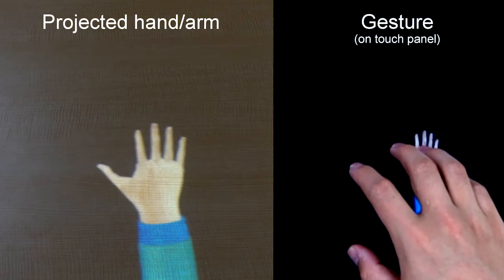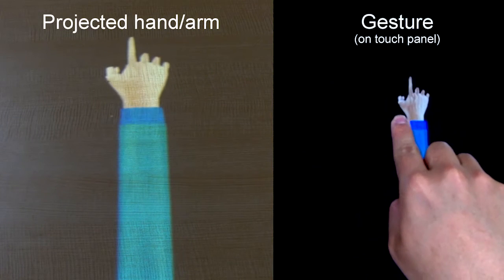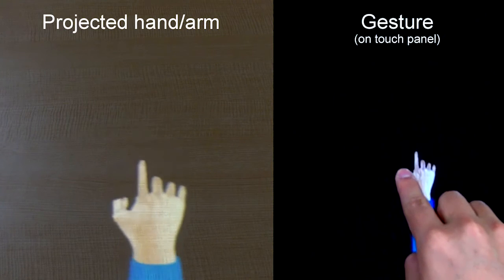When only the index finger is bended, the clicking gesture is triggered. When only the index finger touches on the touch panel, the pointing gesture is triggered.